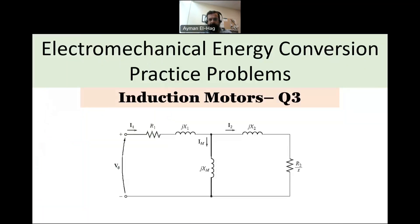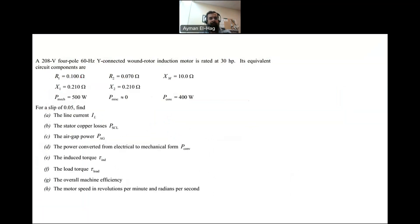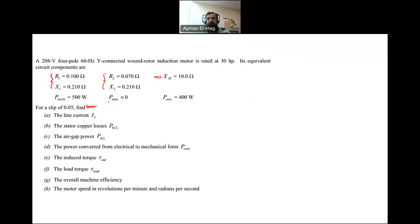We come to our third question about induction motors. In this question, we'll be using the equivalent circuit of the induction motor to find different parameters related to the performance of that specific machine. This is a 208 volt, four pole, 60 hertz, Y-connected wound rotor induction motor rated at 30 horsepower. We are given the equivalent circuit: R1 and X1 (stator impedance), R2 and X2 (rotor impedance), XM (magnetization branch reactance), mechanical and core losses, and a specified slip — since slip depends on the rotor speed of the induction machine.